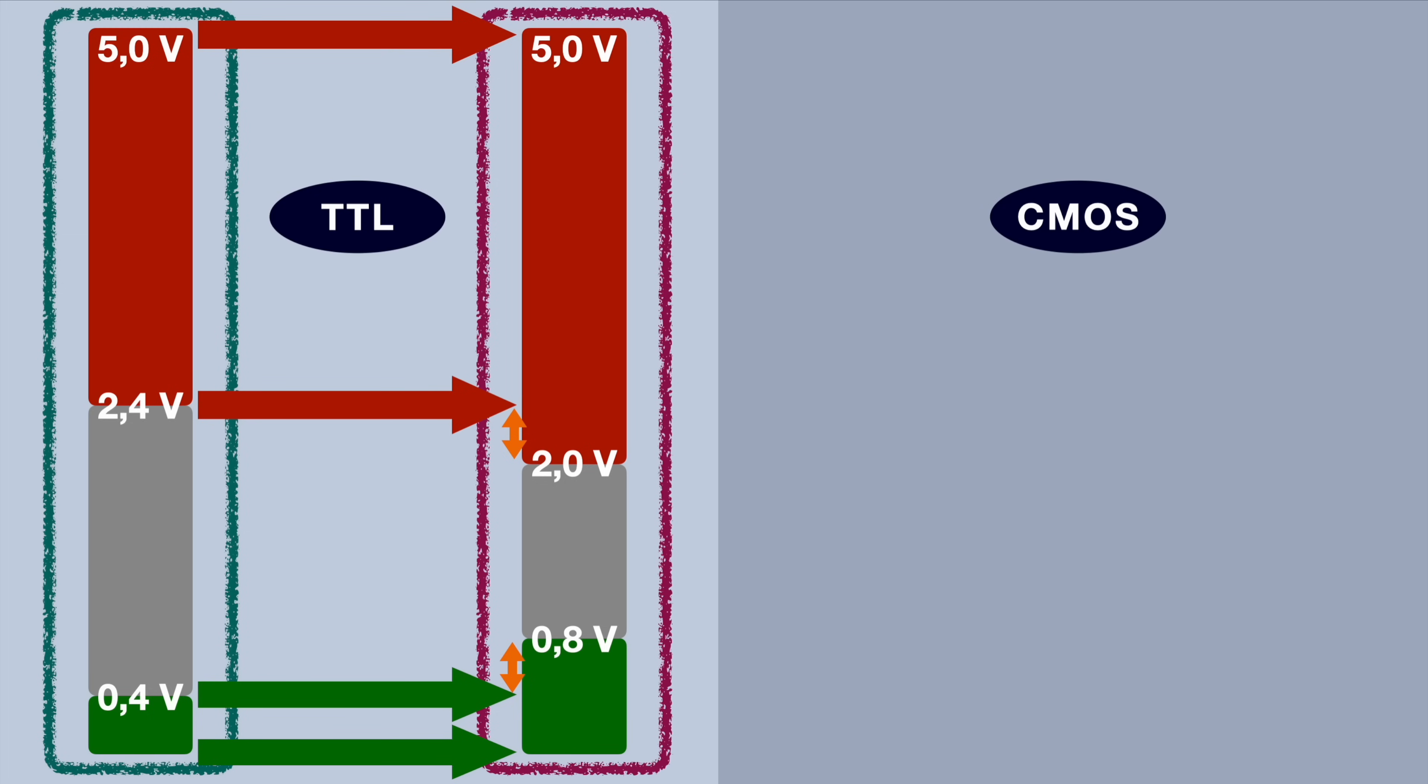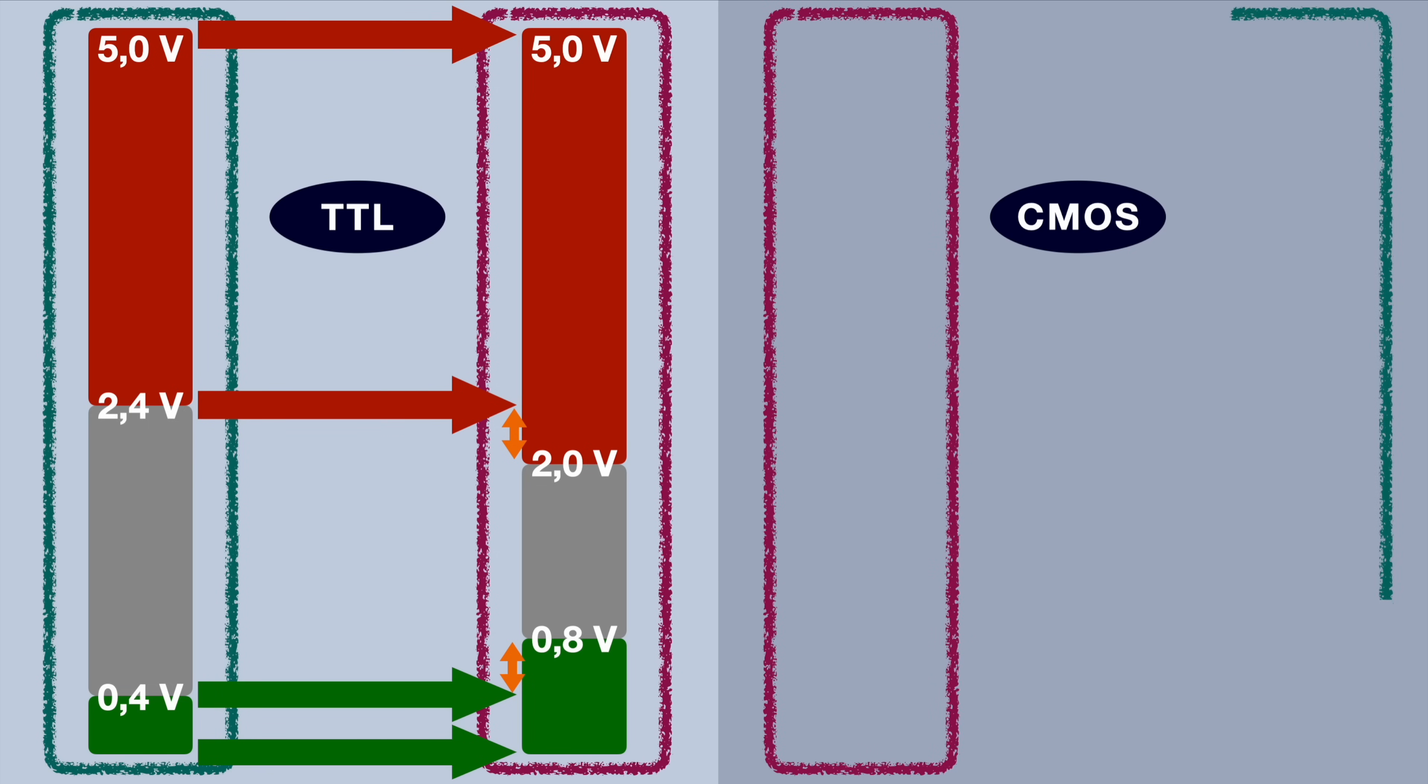Over on the other side in CMOS land, it's a similar setup. We will have the receiver again here in the middle and the sender here on the right hand side. The receiver will interpret everything up to 1.5 volts as a low and everything between 5 volts and down to 3.5 volts as a high. Everything in between, same logic, will be undefined and will cause trouble in your communication.